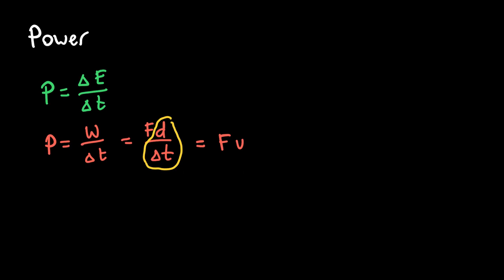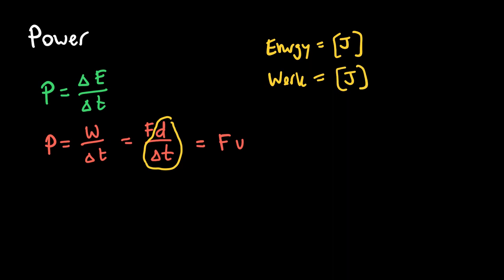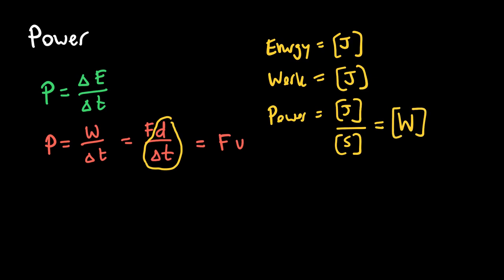Energy and work both have units of joules. Power is work or energy divided by time, so it has units of joules divided by seconds. A joule per second is by definition a watt. Another unit for power is the horsepower, but the unit we will use is the joule per second, which is the watt.